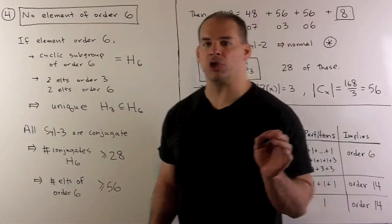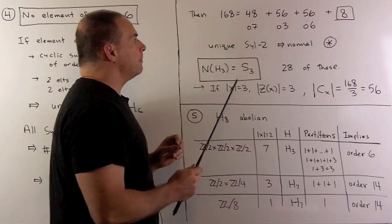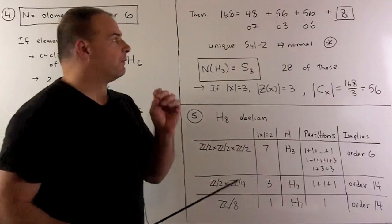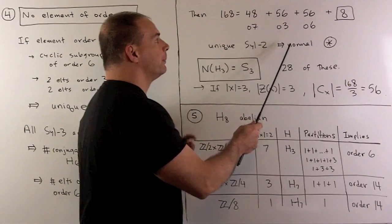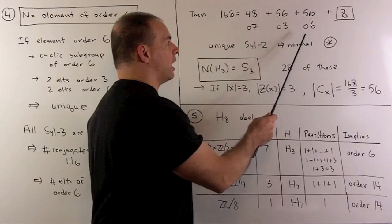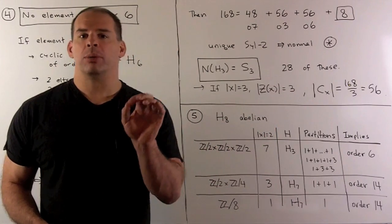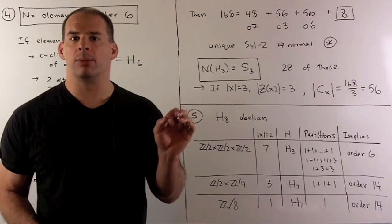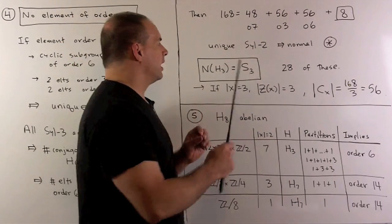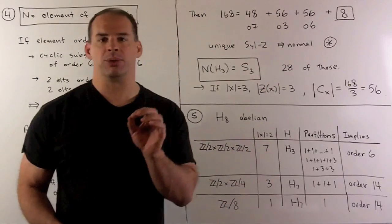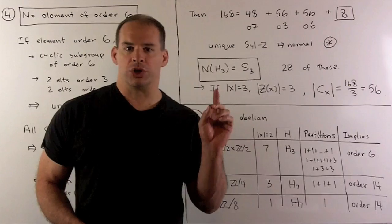We can get a contradiction from that. We note 168 equals: we have 48 elements of order seven, 56 elements of order three, and at least 56 elements of order six. That leaves room for precisely one Sylow 2-subgroup of order eight. Because that's unique, it has to be normal, and that's going to contradict our assumption of simple. So, there are no elements of order six.